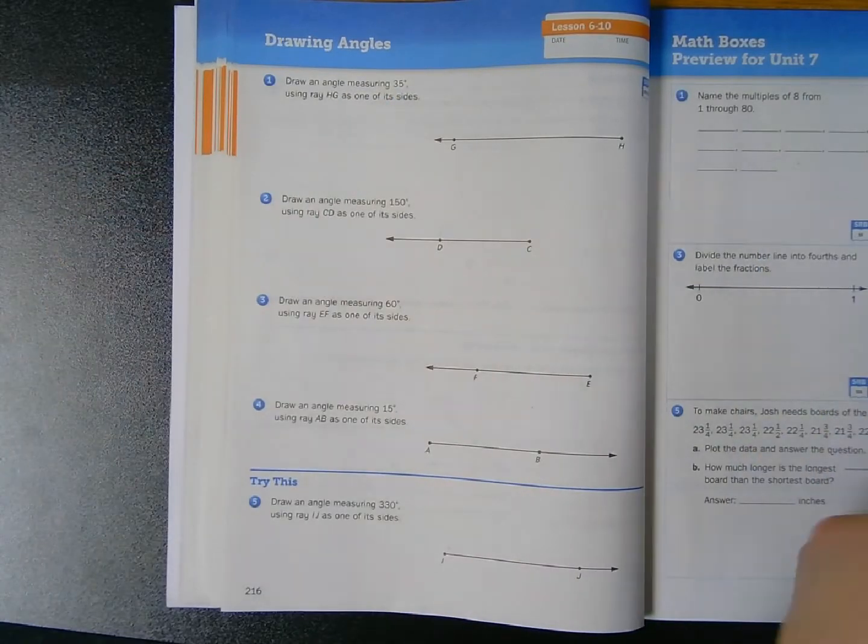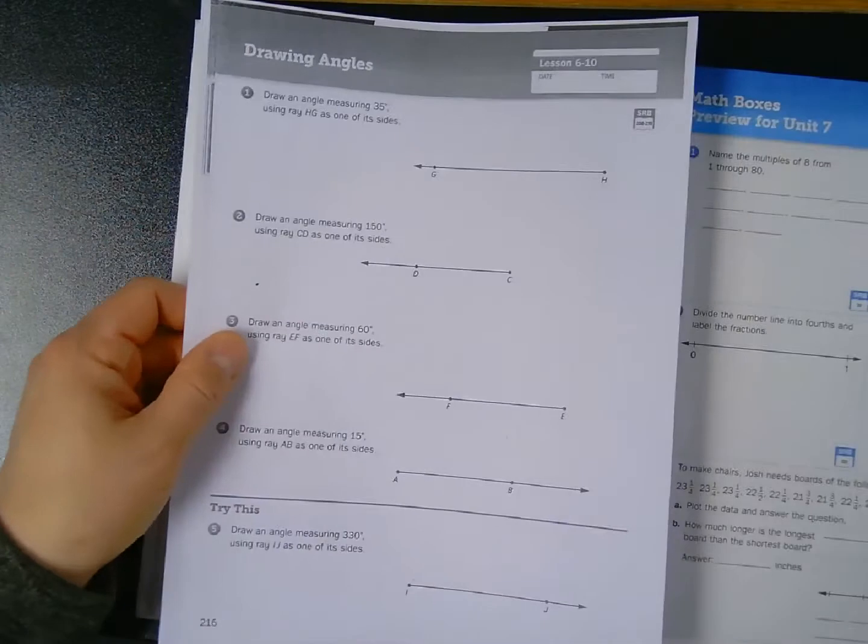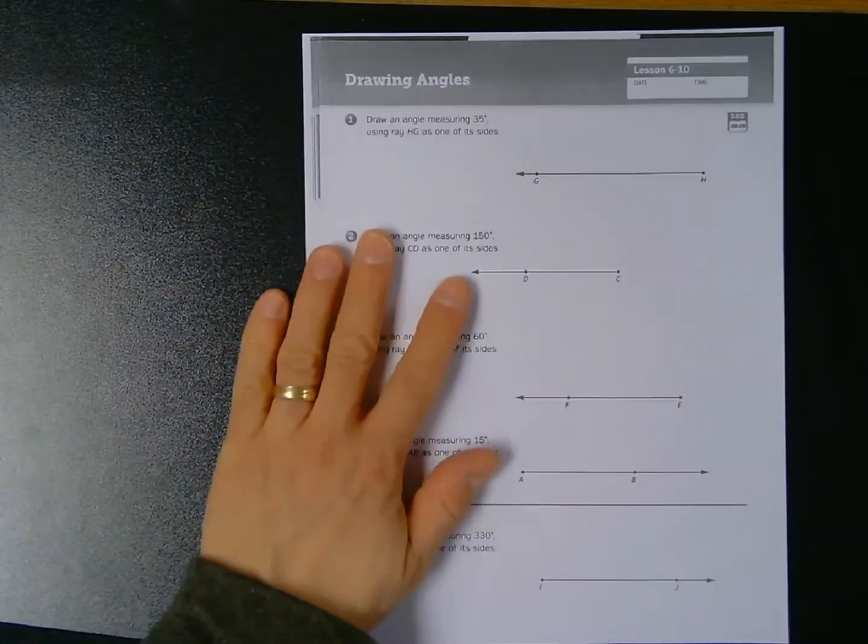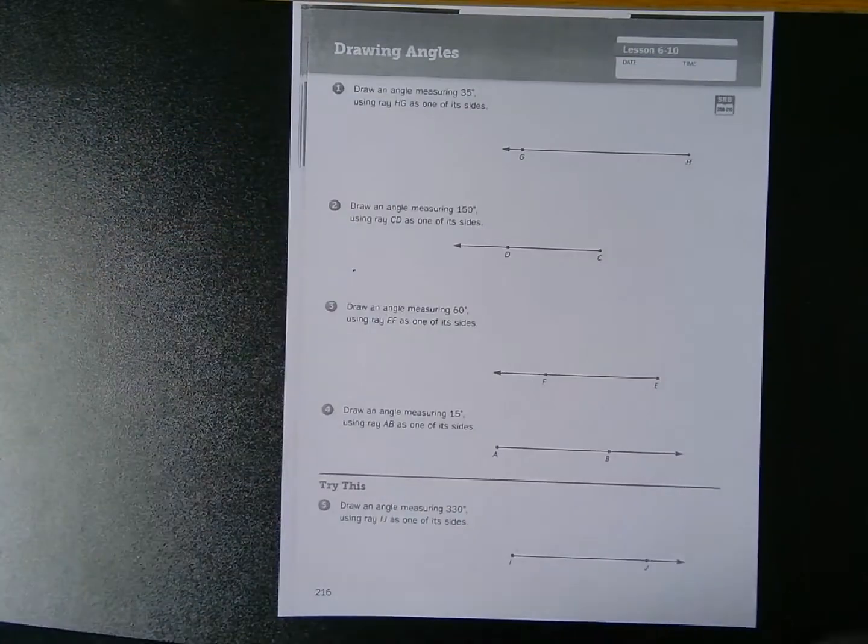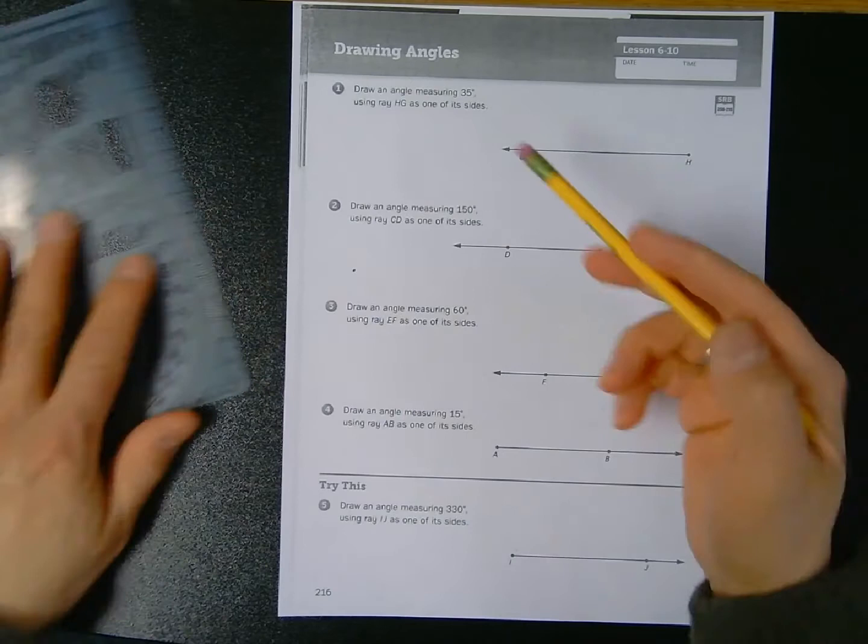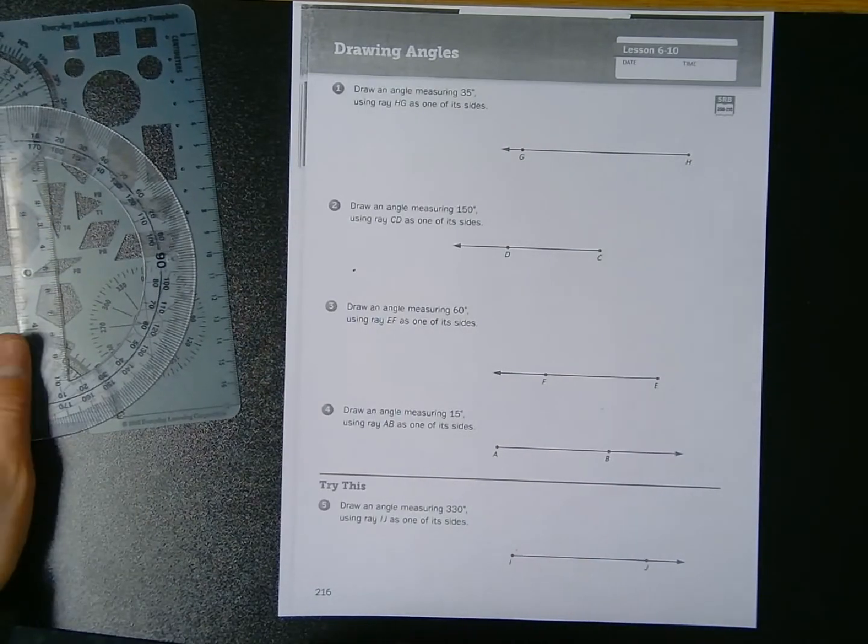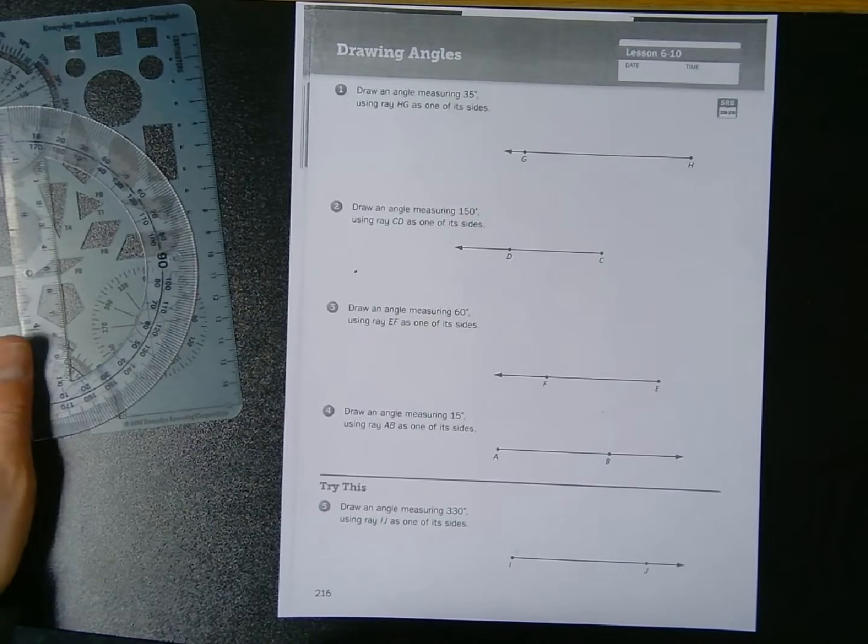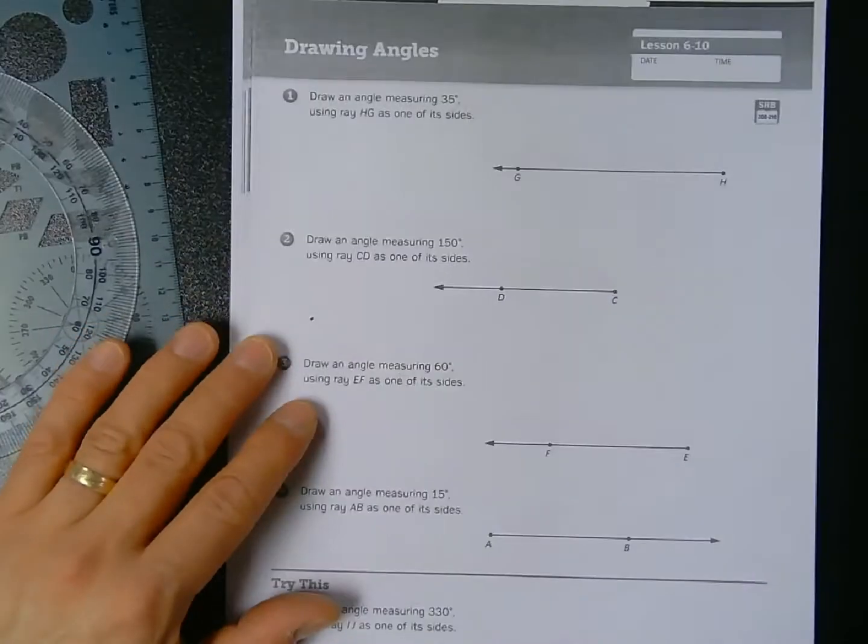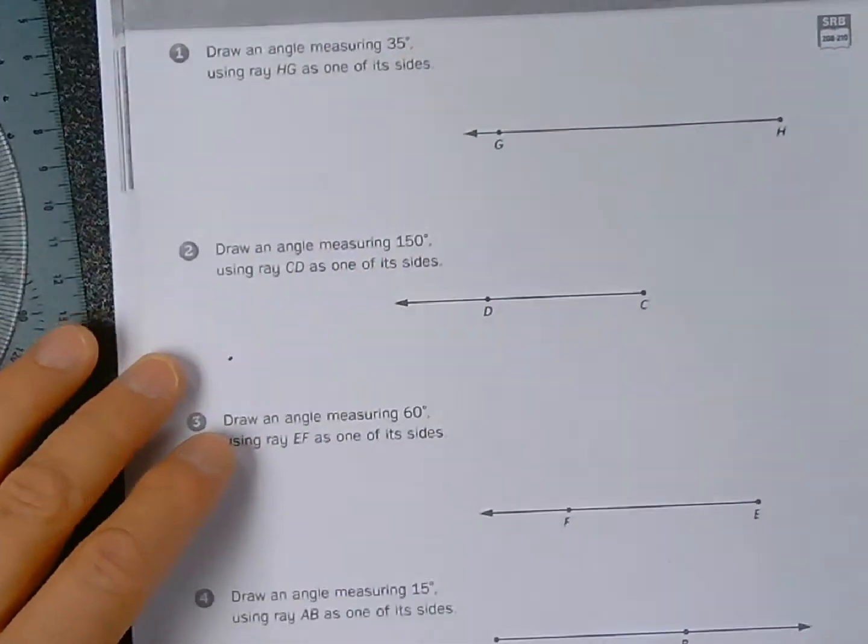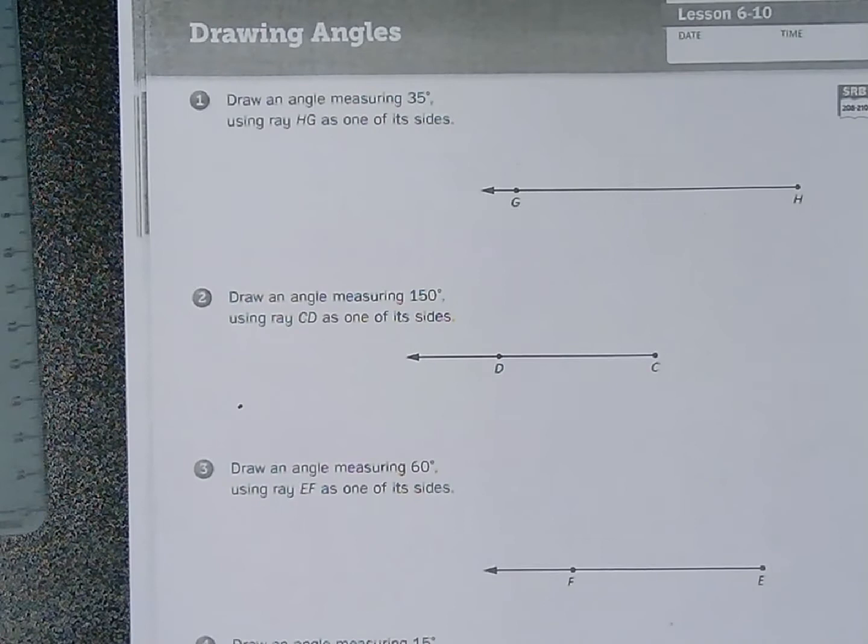Before I get started on making angles, I'm gonna swap out my notebook for this photocopy which will lay flat on my standing desk a lot easier. Let's take a look at number one. It says draw an angle measuring 35 degrees using ray HG as one of its sides.